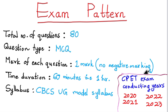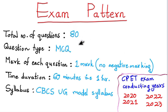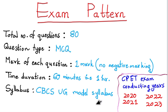Looking at the exam pattern: full marks are out of 100. The question type is multiple-choice questions (MCQ). The total time duration is 60 minutes. The syllabus follows the CBCS UG model — the same model syllabus. This is the complete exam pattern.